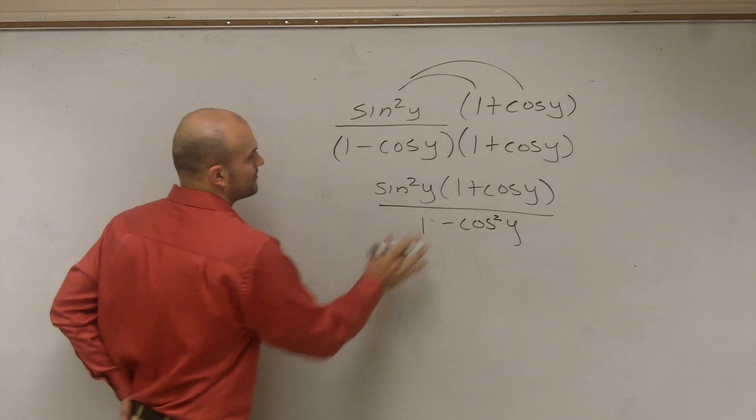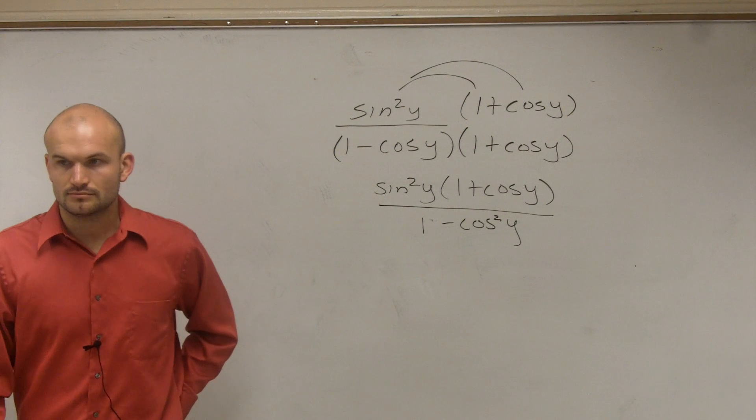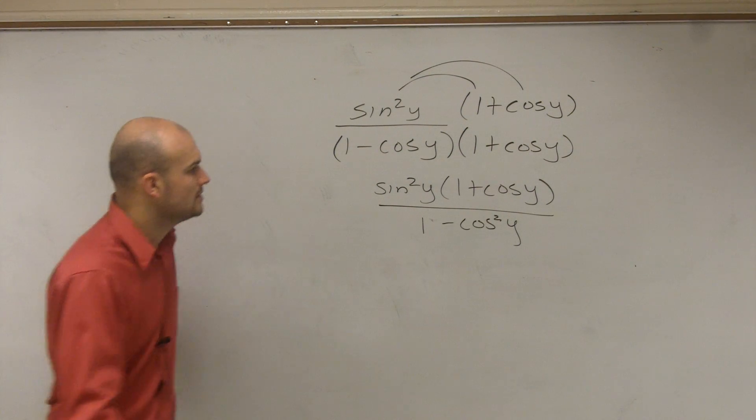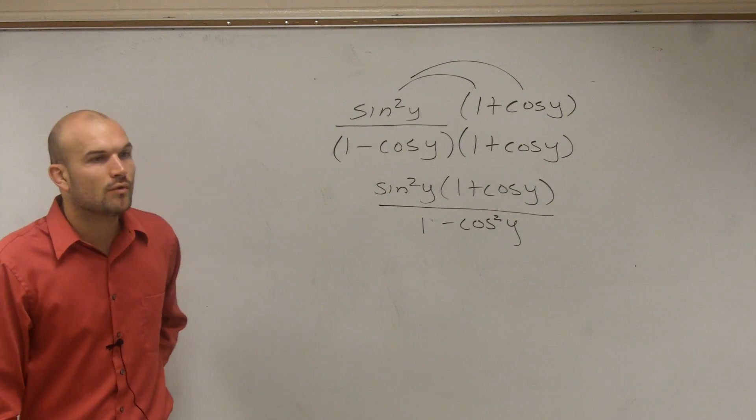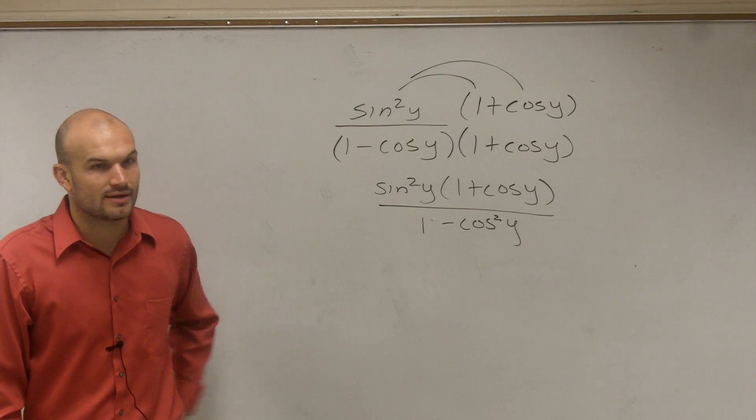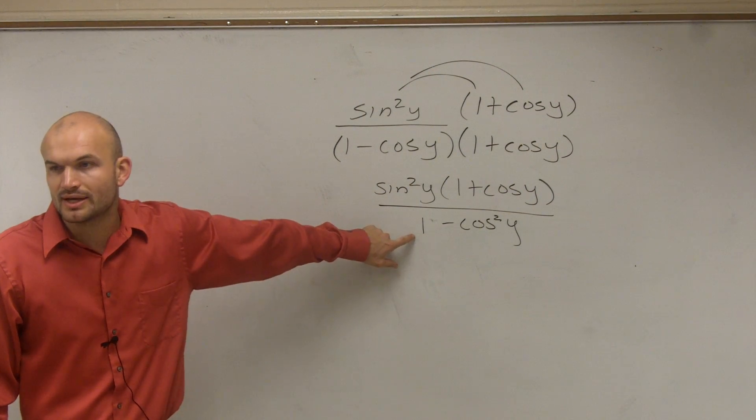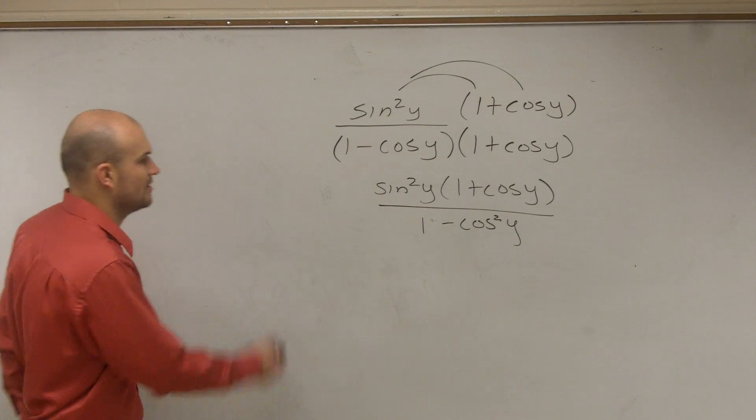Is everybody following me so far? So now, we have 1 plus cosine of y, and we have 1 minus cosine squared of y. Well, we see the squared and we're like, how can we rewrite this as a trigonometric identity?